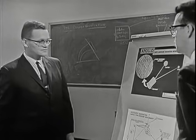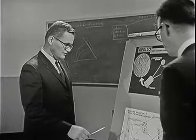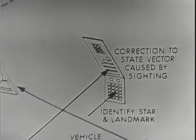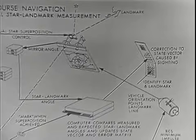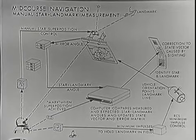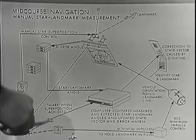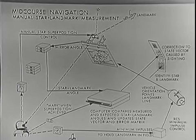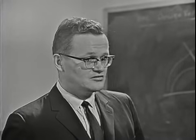Now how is this angle actually measured? It's done automatically via the computer. The astronaut must first identify to the computer the star and the landmark that he's planning to use. Then as he's positioning the spacecraft and the sextant, the computer is measuring the angles between the two. When the astronaut is satisfied that the star is superimposed upon the landmark, he pushes the mark button, telling the computer to record these angles and the time of the measurement. From that information, the computer can compute the position of the spacecraft in space.